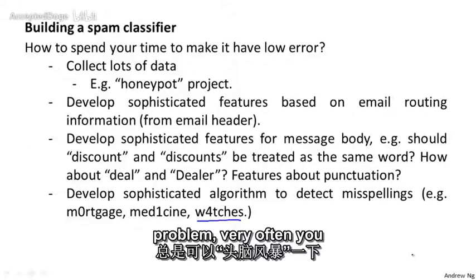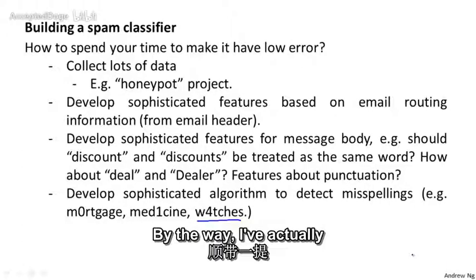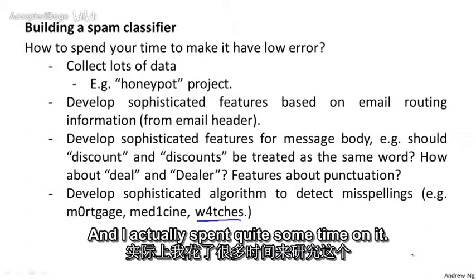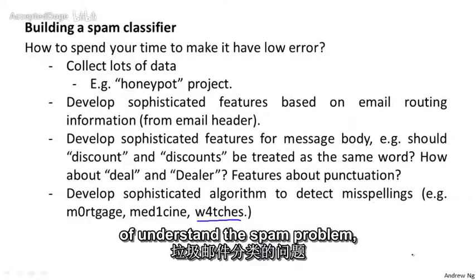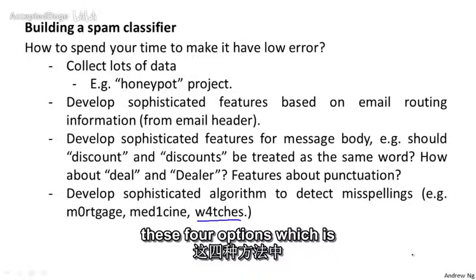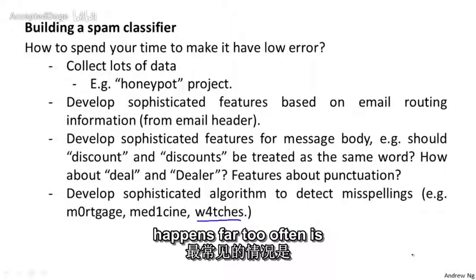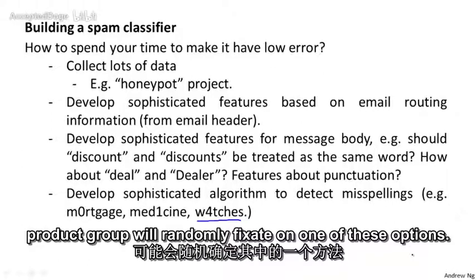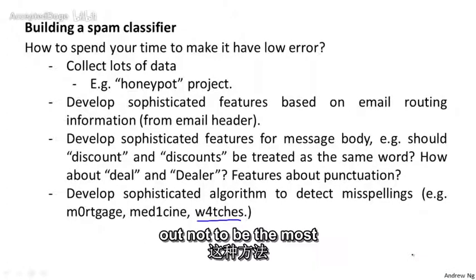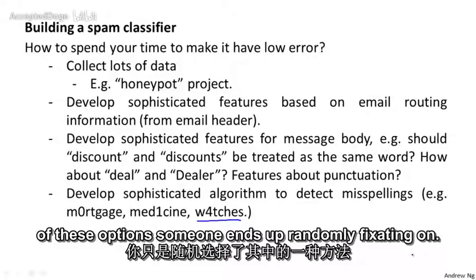When working on a machine learning problem, very often you can brainstorm lists of different things to try. I've actually worked on the spam problem myself for a while and spent quite some time on it. Even though I understand the spam problem fairly well, I would actually have a very hard time telling you which of these four options is the best use of your time. What happens far too often is that a research group or product group will randomly fixate on one of these options, and sometimes that turns out not to be the most fruitful way to spend your time.